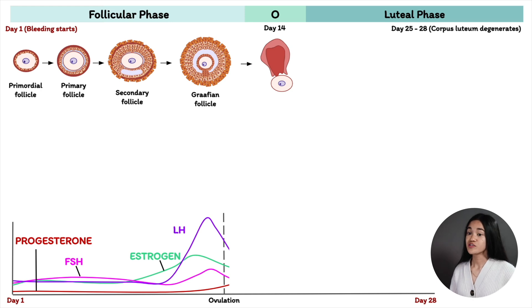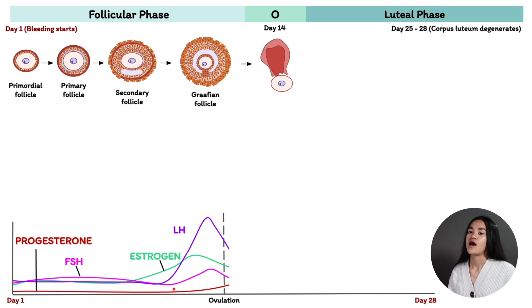During this surge, there is also an increase in FSH and progesterone levels, while estrogen decreases just before ovulation.